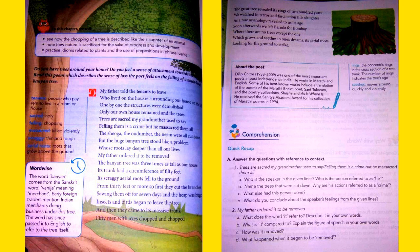Was one of the most important poets in post-independence India. He wrote in Marathi and English. Some of his best known works include a translation of the poems of the Marathi bhakti poet Sant Tukaram and the poetry collections Sisha and As Is Varies. He received the Sahitya Academy Award for his collection of Marathi poems in 1994.